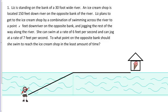The first thing to do in any optimization problem, after reading the problem carefully, is to summarize and dissect the information by drawing a good diagram or picture. Here I already have the outline of a picture. We have Liz on the bank of a river, and ultimately she wants to reach the ice cream shop over here. She's going to take some diagonal path across the river — swim across, reach the bank, and jog the rest of the way. That's the path outlined in black here.